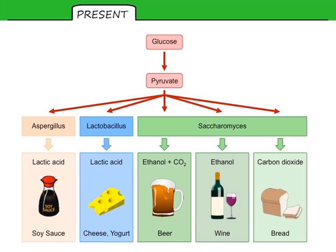This image illustrates different ways in which anaerobic respiration or fermentation can be used to produce different food products. At the top are the products from lactate fermentation or alcoholic fermentation. Cheese, yogurt, and soy sauce are produced with the help of lactate fermentation. Beer, wine, and bread are produced with the help of alcoholic fermentation.